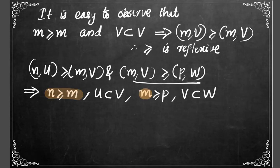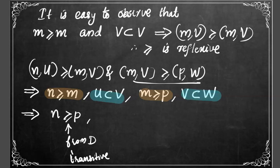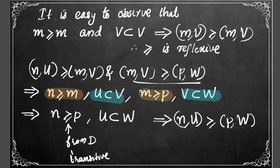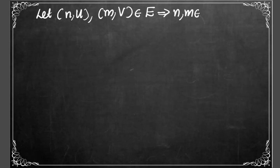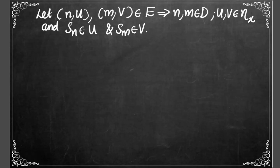Combining these: n follows m and m follows p gives n follows p, since the relation on D is transitive. Also, U ⊆ V and V ⊆ W gives U ⊆ W, so (n, U) follows (p, W). Therefore this relation is transitive as well. Now to prove the third axiom, let (n, U) and (m, V) be from E, meaning both n and m are in D, U and V are neighborhoods of x, and s(n) ∈ U and s(m) ∈ V.